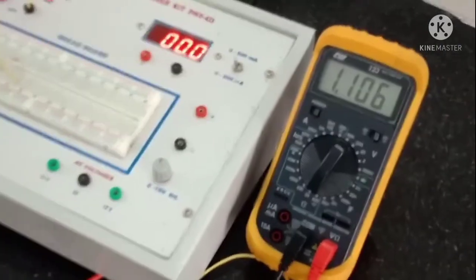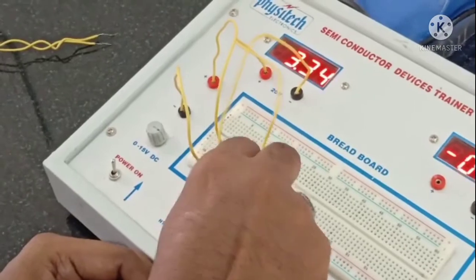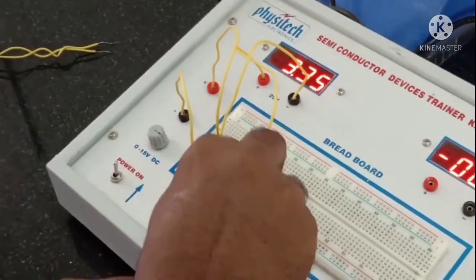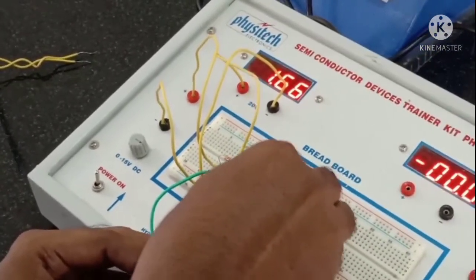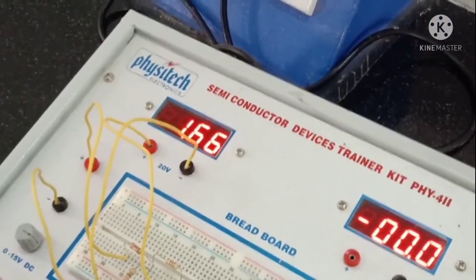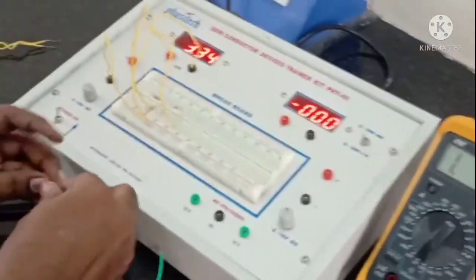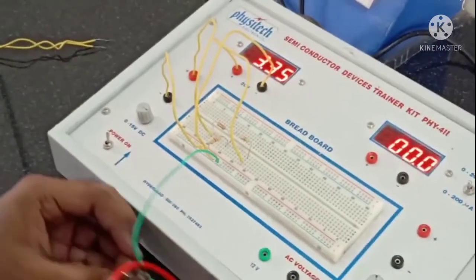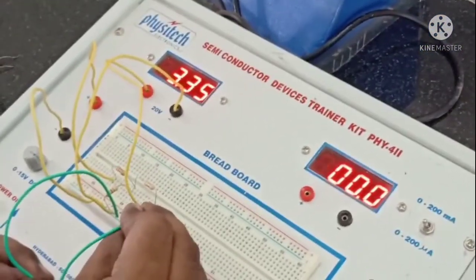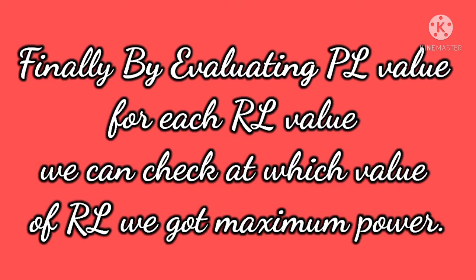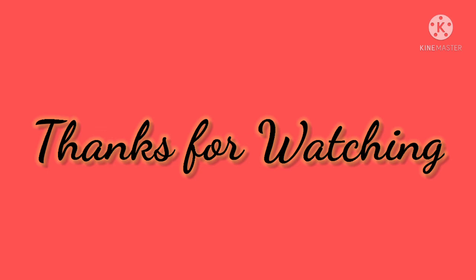I am varying the RL value and measuring it with the help of the multimeter, then connecting it into the circuit to measure the voltage across that RL value. In each step we vary RL, measure that RL value with the multimeter, and also measure the voltage across the load resistor. We increase RL from zero and record the voltage across RL for various readings. Finally, by evaluating PL, the power consumed at each load resistor, we can check at which value of load resistor we get the maximum power. In this way we can verify the maximum power transfer theorem practically by conducting an experiment in the laboratory. Thanks for watching this video.